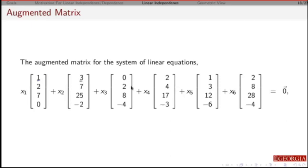What does it say? This says that X1 plus 3X2 plus 0X3 plus 2X4 plus X5 plus 2X6, what's the zero vector, has to give me zero. This line right here says 2X1 plus 7X2 plus 2X3 plus 4X4 plus 3X5 plus 8X6 has to be zero, and I can go on down. So in terms of this system of linear equations, I can write this as an augmented matrix.